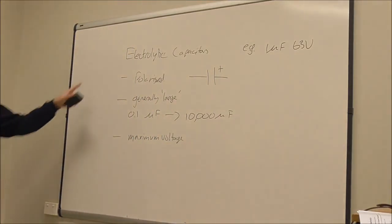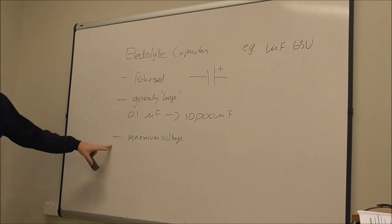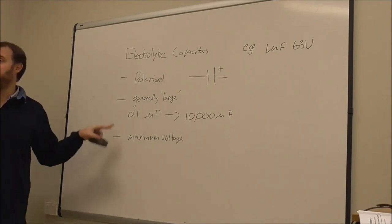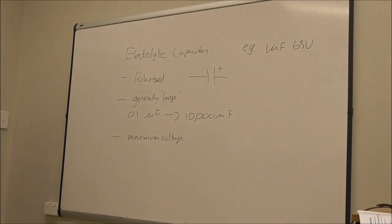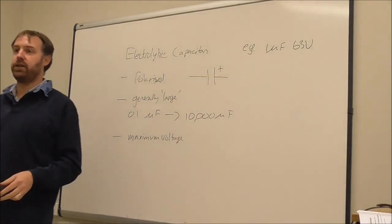So, electrolytic capacitors, they're polarised, generally large, so microfarad sort of scale, up to many thousands of microfarads. They have a maximum voltage, and all capacitors have a maximum voltage, but they're usually written on the actual side of the capacitor. They tend to not write the picofarad code on electrolytics, because they're big enough, they can actually write the value on there. So, you might see, actually written on the capacitor, one microfarad, like that.